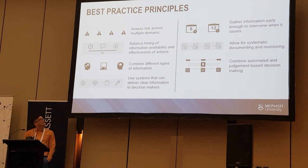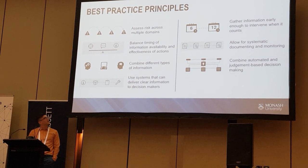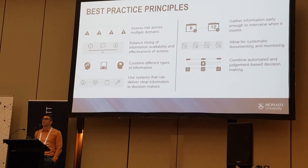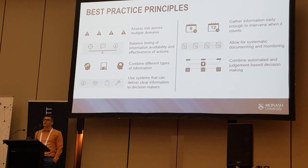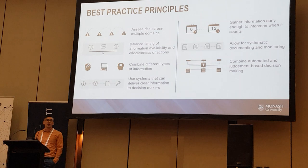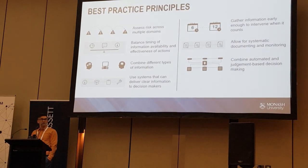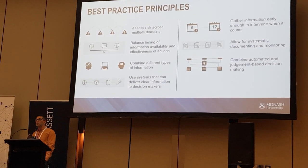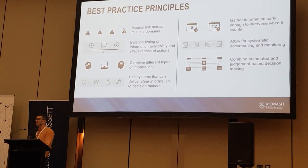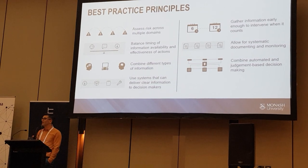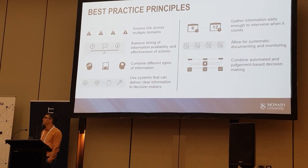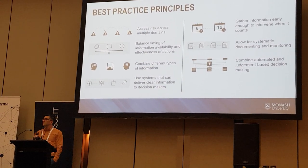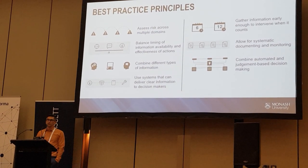You should combine some automated and judgement-based decision making. The research tells us you can't have just one — whether it's purely automated decision making or purely qualitative, you need a balance between the two.